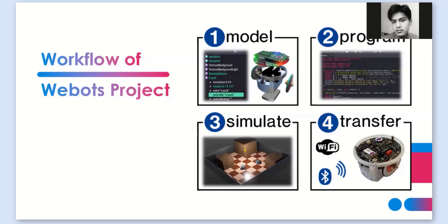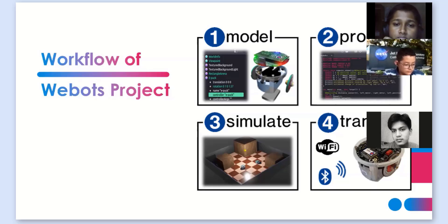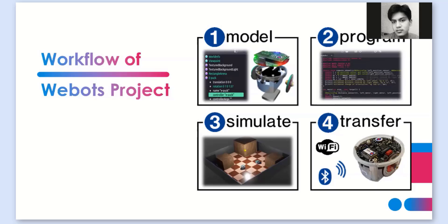After making the robot model, we also make a model of the environment — for instance, if we are making a self-driving car, we might need a road. Webots has one advantage in that it has various pre-made projects where the model and program have already been written. We can just load the project, look at it, and edit it since it is all open source. After making the model, we write programs.